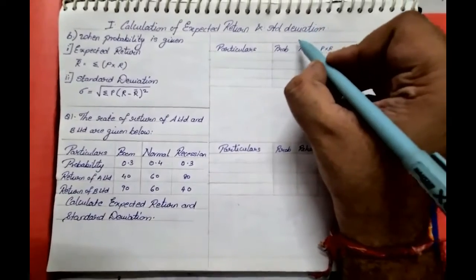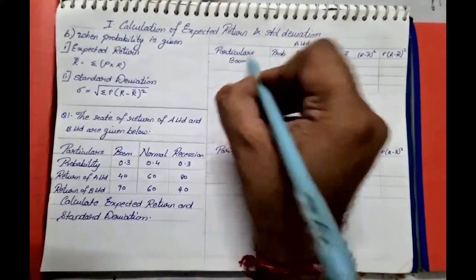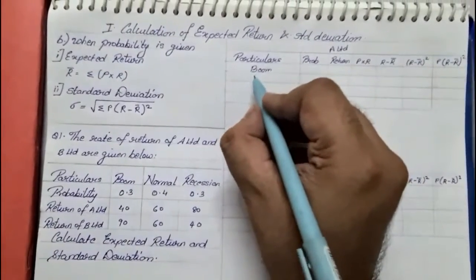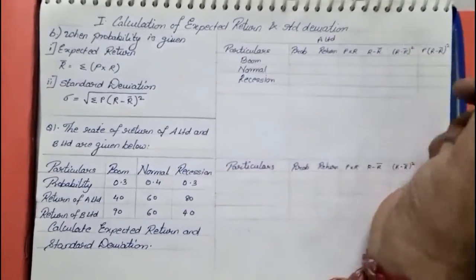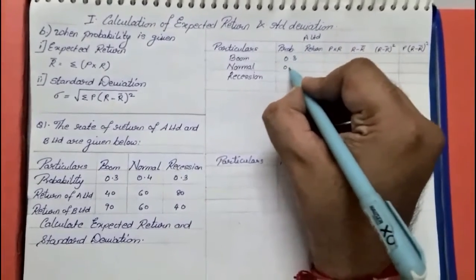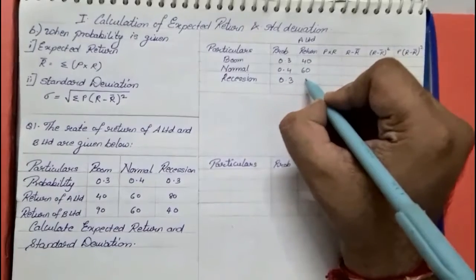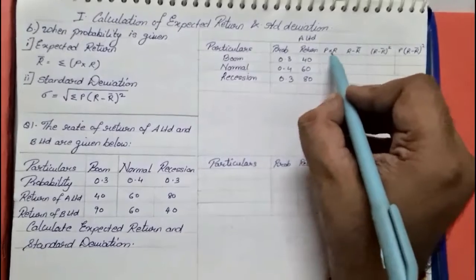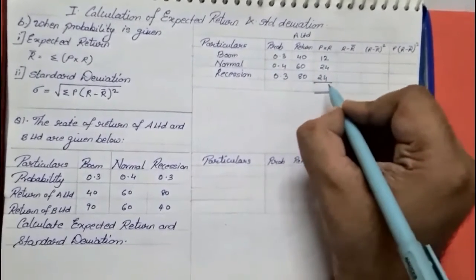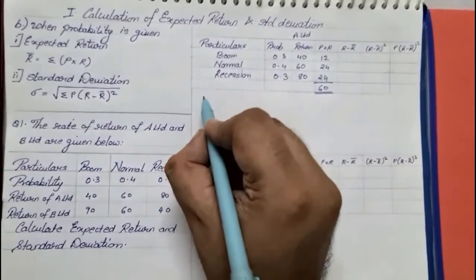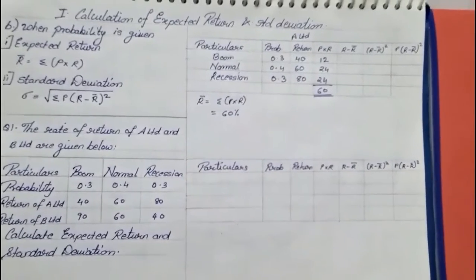First we are going to solve for A Limited. The three conditions are: boom period, normal period, and recession period. The probabilities given are 0.3, 0.4, and 0.3. The returns of A Limited are 40%, 60%, and 80%. We multiply probability into return (p × r) and get values 12, 24, and 24. The total of p × r comes to 60. So the expected return r̄ = Σ(p × r) = 60%.